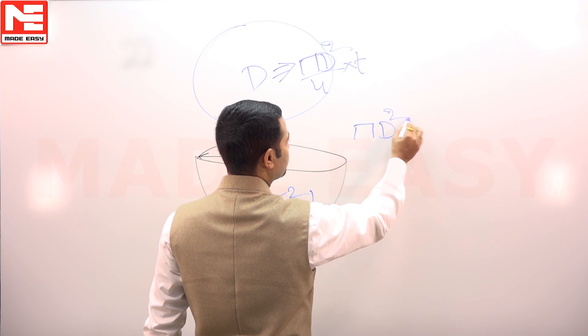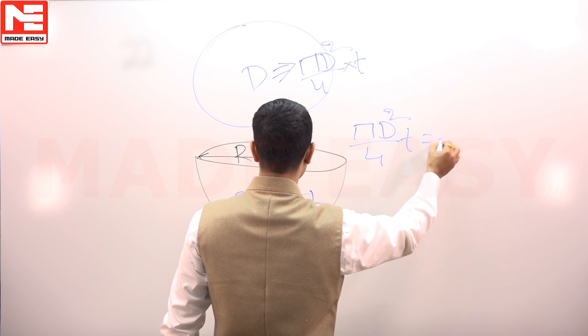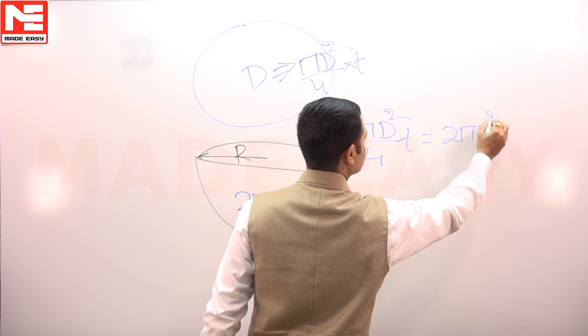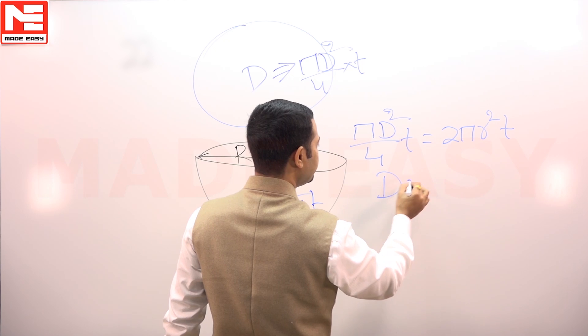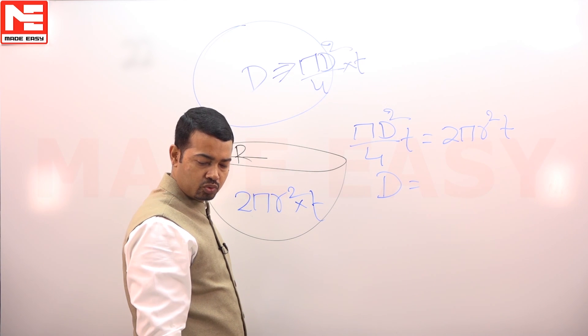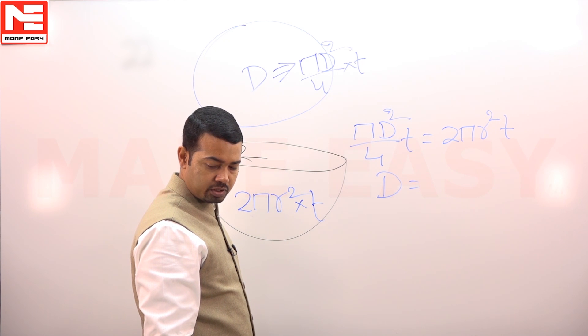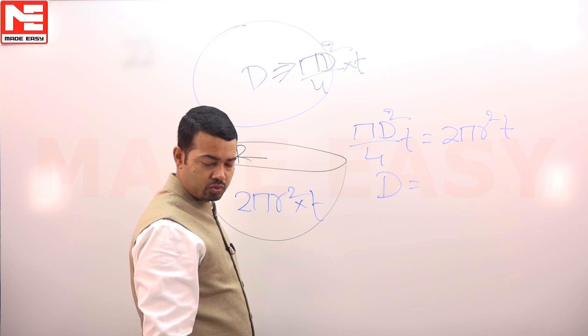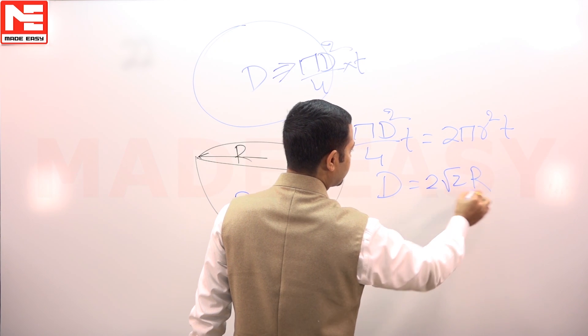Therefore, πD²/4 × t = 2πr² × t. Therefore, D = 2√2r.